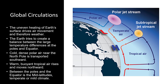The uneven heating of Earth's surface drives air movement and therefore weather. The Earth tries to create a balance between the large temperature differences at the poles and equator. Cold, dense polar air near the North Pole is transported southward, while warm, buoyant tropical air rises and moves northward.